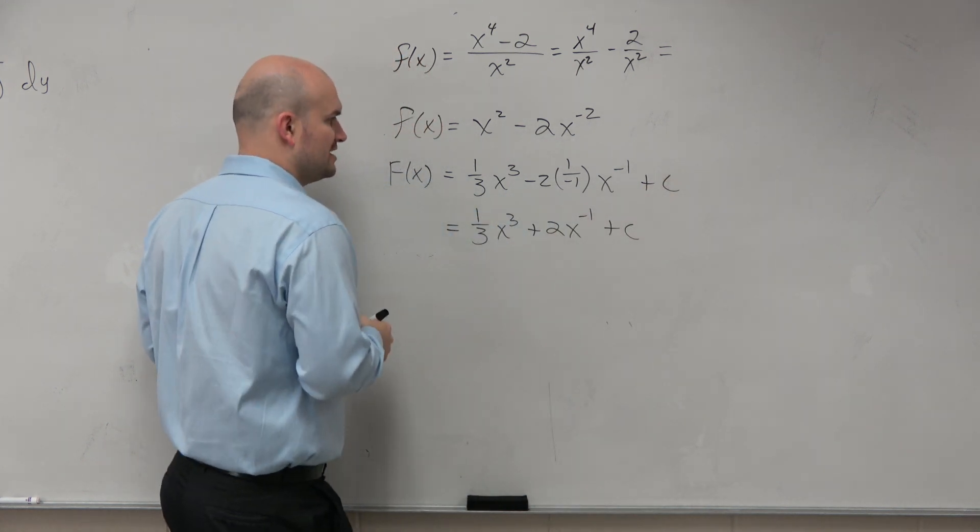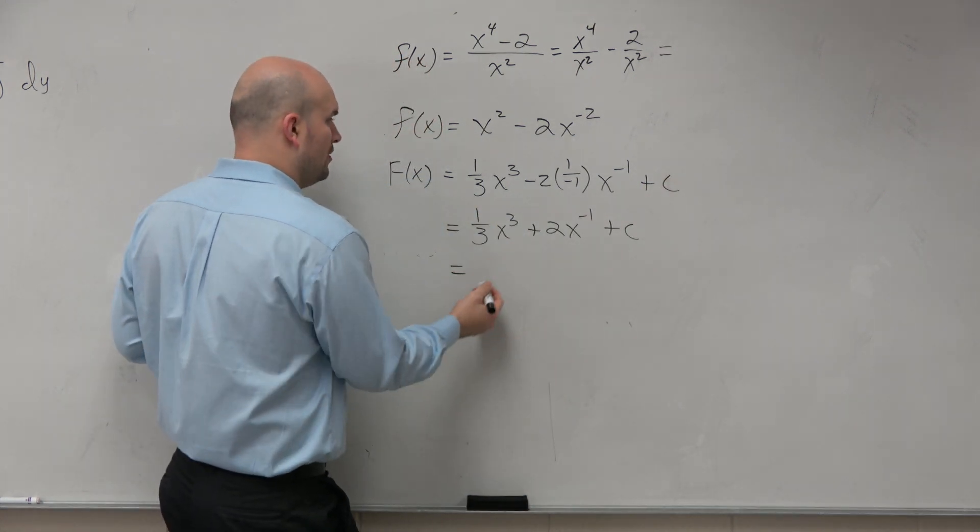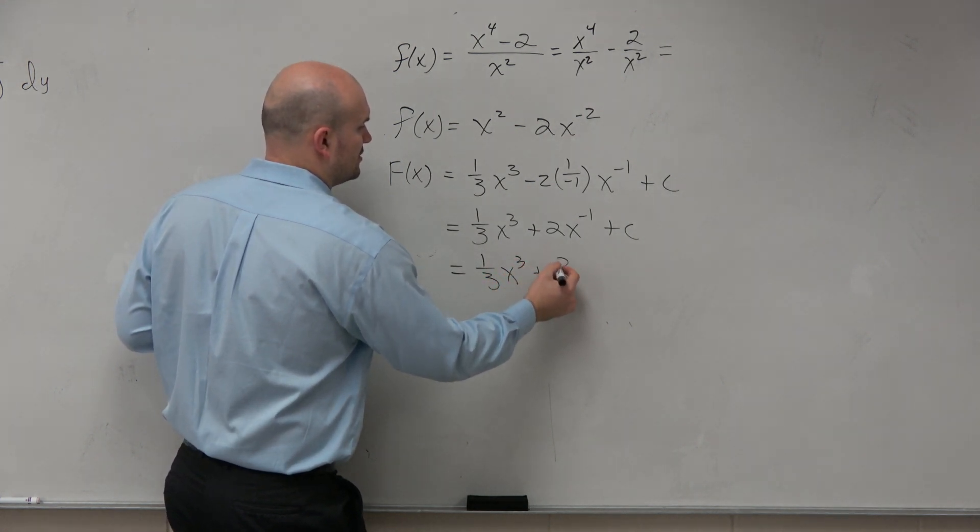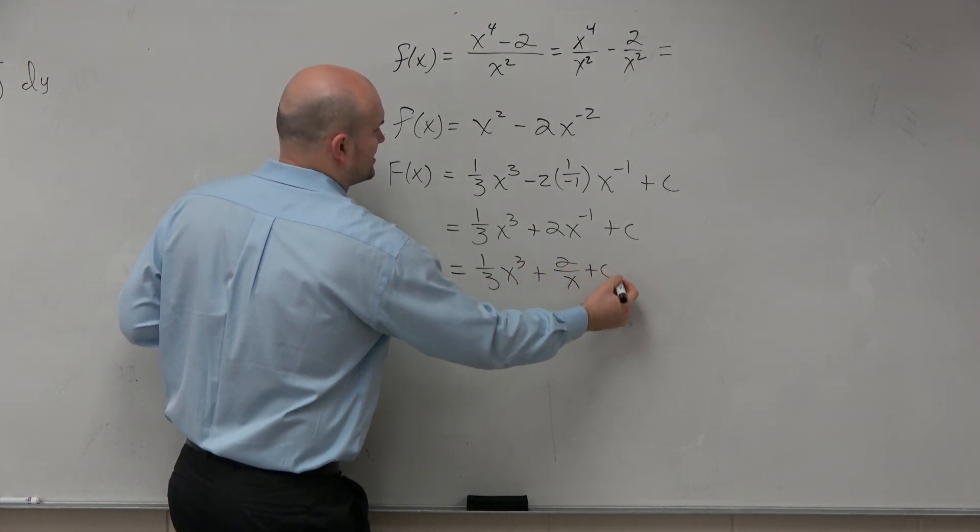I should actually add the c up there, too, because I actually did integrate. Or we could obviously still write this as x cubed plus 2 over x plus c.